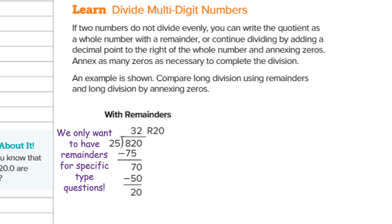Let's put this in a scenario. Let's say we have 820 students and buses that can carry 25 students per bus. We need to know how many buses we need to get all of the students transferred. As we're dividing, we find out we need 32 buses filled with 25 students each, with 20 students left over. Do you want to be one of those 20 students left behind? No. So how many more buses do we need? If I have 20 extra students, I still need one more bus. So the answer is 33 buses.